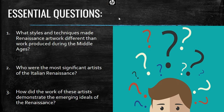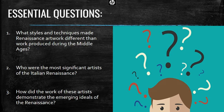So let's take a look at our essential questions which will guide our examination. Hopefully we can answer these three questions by the end of today's lecture. Number one, what styles and techniques made Renaissance artwork different than work produced during the Middle Ages? Number two, who are the most significant artists of the Italian Renaissance? And number three, how did the work of these artists demonstrate the emerging ideals of the Renaissance?